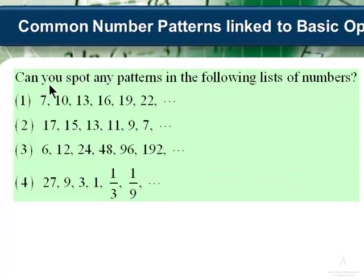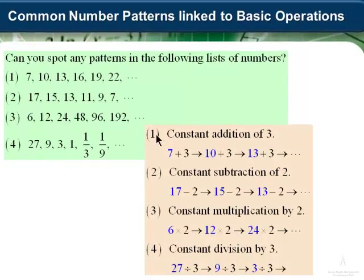Let us consider common number patterns linked to the four basic operations. Here we want to see if you can spot any patterns in the following lists of numbers. In the first example, you should be able to identify the constant addition of 3. To move from a particular term to the next term, we constantly add 3. If we add 3 to 7, we end up at the next term 10, and if we add 3 again to that, we end up with 13, and so on. So here we have constant addition of 3.